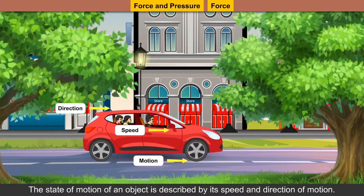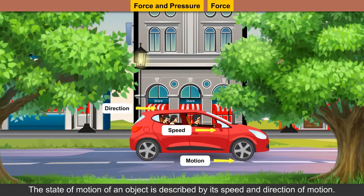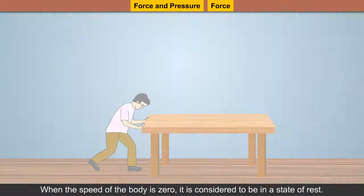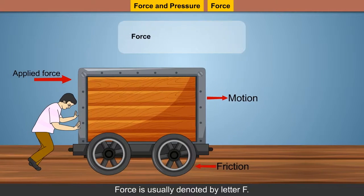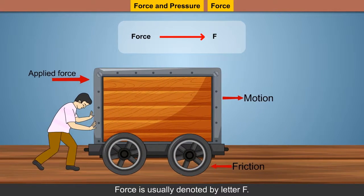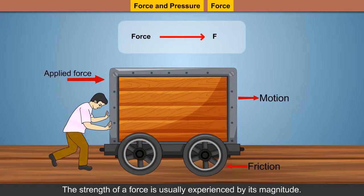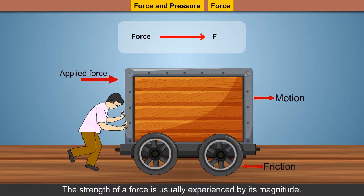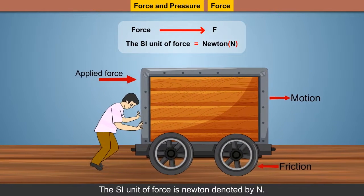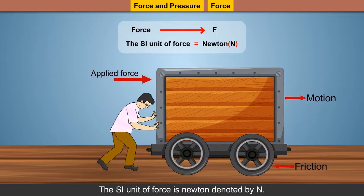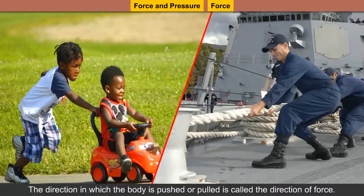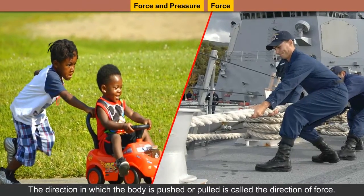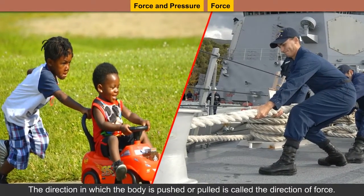The state of motion of an object is described by its speed and direction of motion. When the speed of the body is zero, it is considered to be in a state of rest. Force is denoted by the letter F. The strength of a force is usually expressed by its magnitude. The SI unit for force is Newton, denoted by N. The direction in which the body is pushed or pulled is called the direction of force.